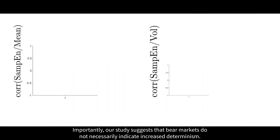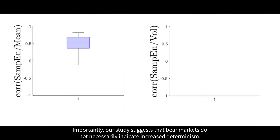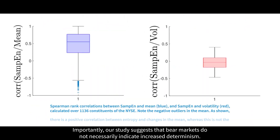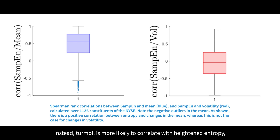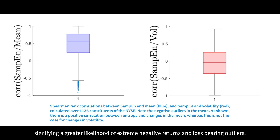Importantly, our study suggests that bear markets do not necessarily indicate increased determinism. Instead, turmoil is more likely to correlate with heightened entropy, signifying a greater likelihood of extreme negative returns and loss-bearing outliers.